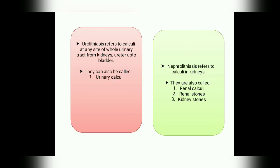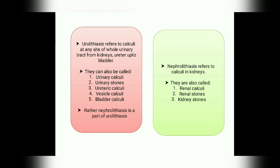Stones can also be called urinary calculi or urinary stones. If the stone is in the ureter, it is called ureteric calculi. If it is in the bladder, it is called vesicle calculi or bladder calculi. If it is in the kidneys, it is called renal calculi or nephrolithiasis. So ultimately, nephrolithiasis is a part of urolithiasis.